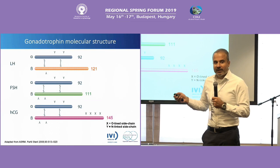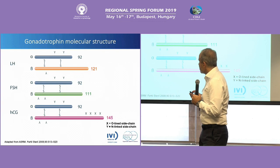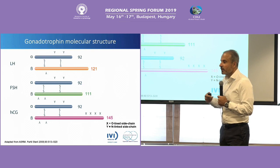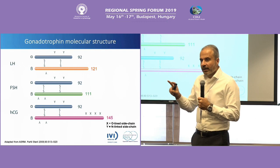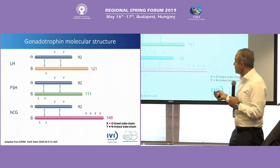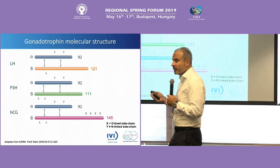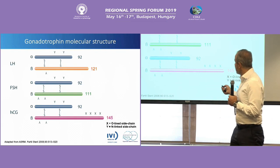What hormones are we using for ovarian stimulation? Part of these slides you have seen yesterday from Professor Smits. We know that these gonadotropins are very, very similar. If you're looking at LH, FSH, or even hCG, they are very similar — they have two parts: an alpha part and a beta part. The alpha part is exactly identical; there is no difference in the alpha part among these hormones.